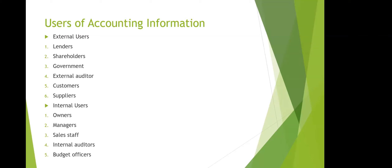Here we look at users of accounting information. When you process and record all your transactions, you summarize them and provide financial statements for people who want to make decisions related to your business. There are two types of users: external users and internal users. External users are people outside your business who cannot directly access your accounting system data.